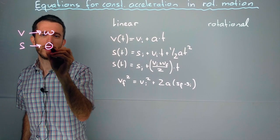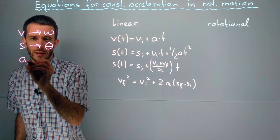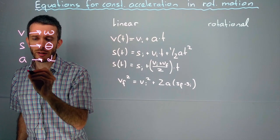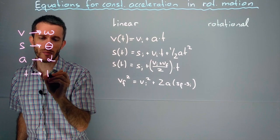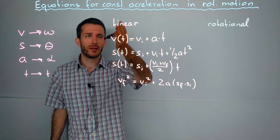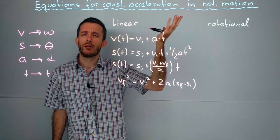you replace it by the theta. And whenever you see an a in the linear case, you replace it by an alpha. The only thing that remains the same is the time, which remains the time. So, all we do is we replace the Latin characters by their Greek counterparts to express rotational motion.